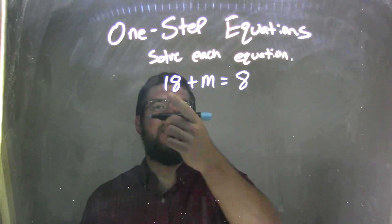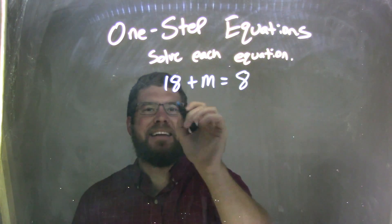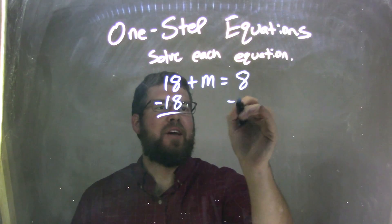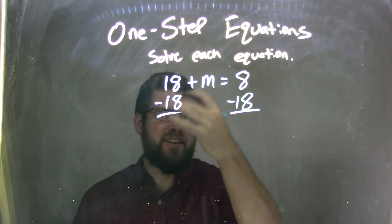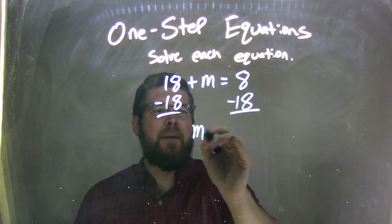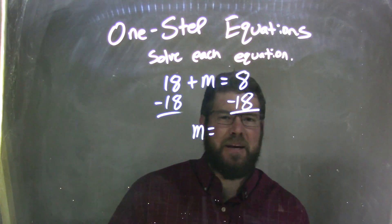Hmm, well, that's addition right here, right? Adding 18, so I'm just subtracting 18 from both sides. Opposite of that is positive 18, right? So I'm left with an m here, but now I have 8 minus 18. What's that?